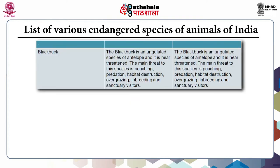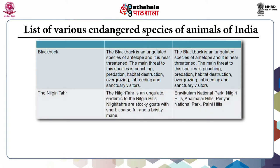The Blackbuck is an ungulate species of antelope and it is near threatened. The main threats to this species are poaching, predation, habitat destruction, overgrazing, inbreeding, and sanctuary visitors. The Nilgiri Tahr is an ungulate endemic to the Nilgiri Hills. Nilgiri Tahrs are stocky goats with short, coarse fur and a bristly mane.